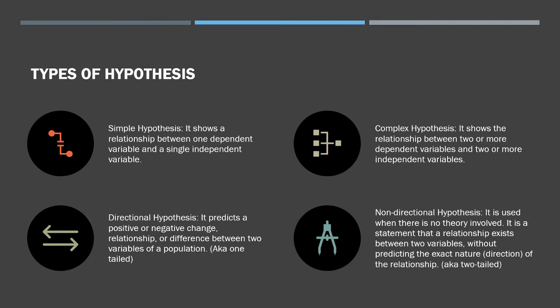The other type is the complex hypothesis, which involves two or more dependent variables and two or more independent variables. For example, eating more fruits and vegetables will lead to a good sleep pattern, a fresher-looking skin, more collagen in the skin, and will help in weight loss. Here we have one independent variable and multiple dependent variables, making this a complex hypothesis.